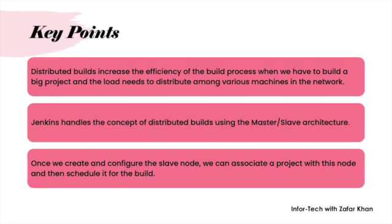Key points: distributed architecture increases the efficiency of the build process when you have a very big project and want to distribute the load among various machines. Jenkins handles the concept of distributed builds using master-slave architecture. Once we create and configure the slave, we can associate a project with that node and then schedule it for build.